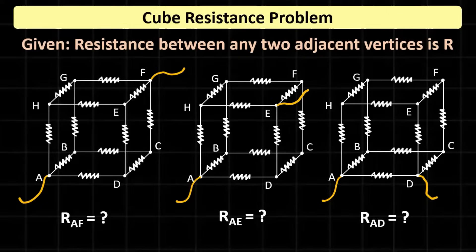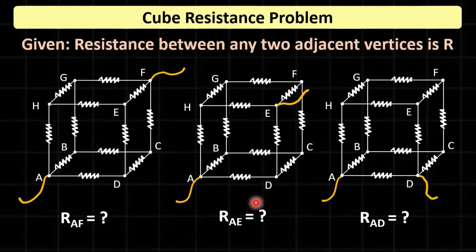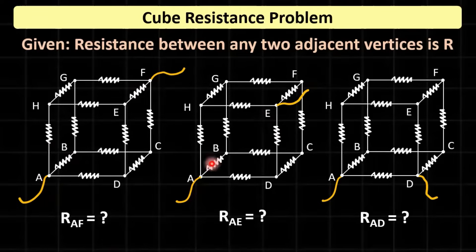In the cube resistance problem, there is a skeleton of a cube. The resistance of each side of the cube is R — the resistance between any two nearest or adjacent vertices is R. There are three types of problems that can be asked: finding resistance along the body diagonal (like A and F), along a face diagonal (like A and D), and between two nearest adjacent vertices.